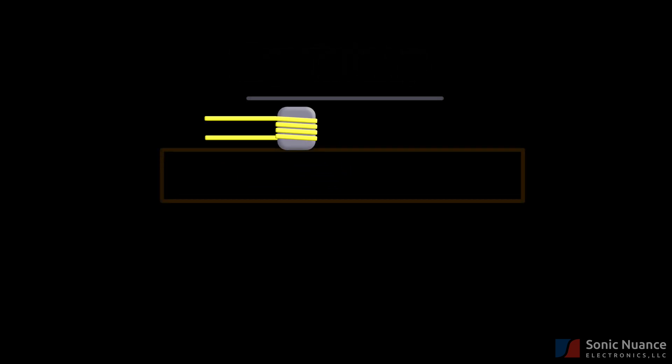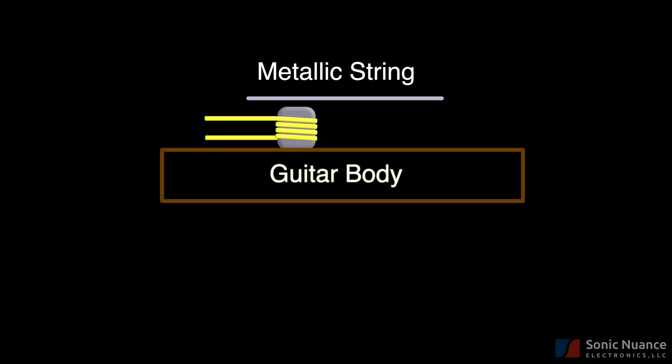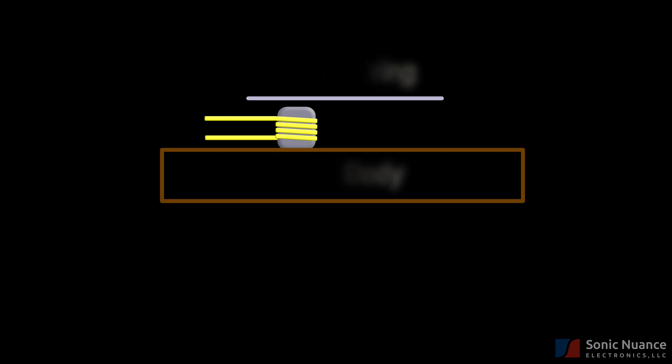To begin our discussion on humbucking pickups, we're going to start off with this diagram of a simplified magnetic pickup. It's actually a single coil in this case. If you haven't done so, I highly suggest listening to the first video. There's a link to it in the description where we talk in depth about how that works. On top of the pickup, we have a string, a metallic string. Below it, we have the body of the guitar, so that you are looking at the side of the guitar as if you're wearing it and looking down.